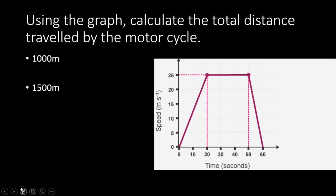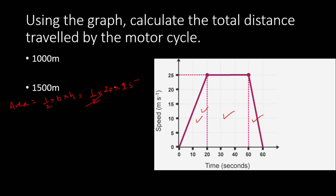Next question: using the graph, calculate the total distance traveled by the motorcycle. To calculate total distance we need to calculate the area under the graph. The graph is divided into two right-angle triangles and one rectangle. For the first section (triangle): area = ½ × base × height = ½ × 20 × 25 = 250 metres.